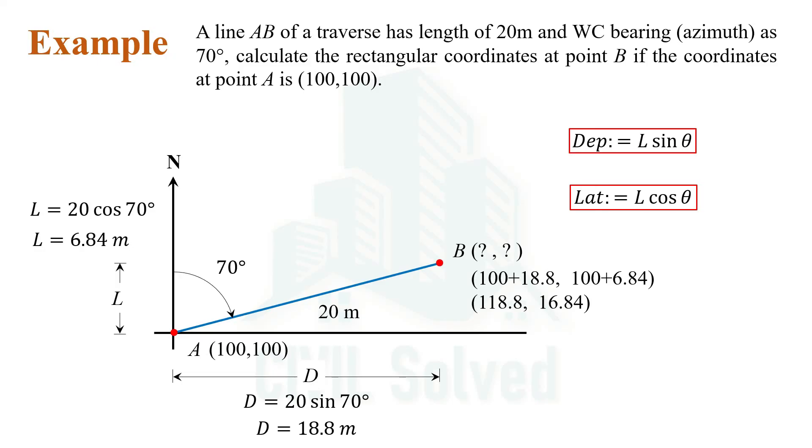This is how the calculation is done when the coordinate of one point is given and the coordinate of the next point is required, along with the length and bearing of the line. That's all for this video — thank you for watching.